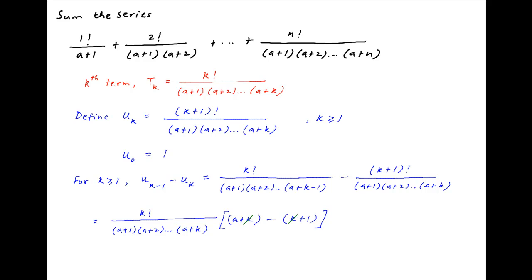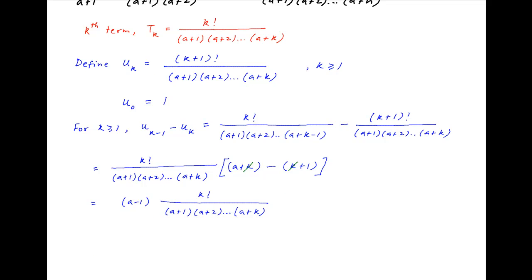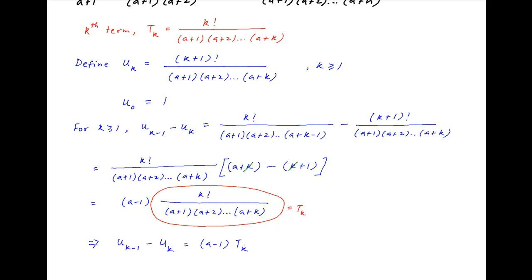Inside the brackets, k cancels and the expression simplifies to (a-1) times k factorial divided by (a+1)(a+2)···(a+k). Note that k factorial divided by (a+1)(a+2)···(a+k) is equal to tk, and therefore uk-1 minus uk is equal to (a-1)·tk.